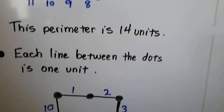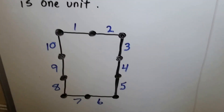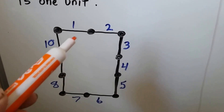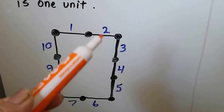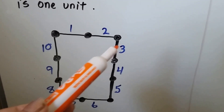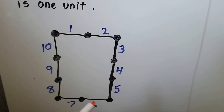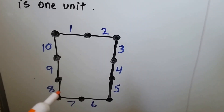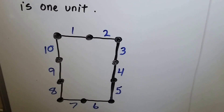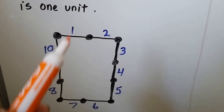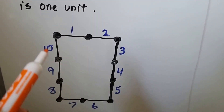Each line between the dots is one unit. We have one line, two lines, three, four, five, six, seven, eight, nine, ten. That means our perimeter is 10 — it's 10 units around.